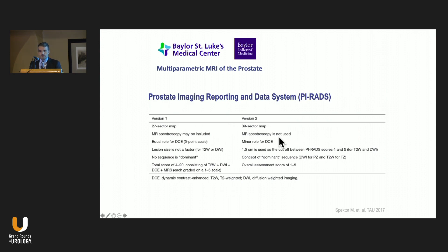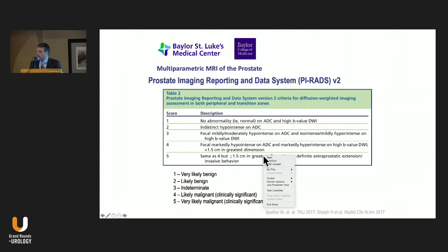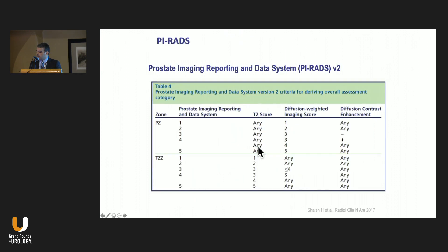A quick comparison between the original version of PI-RADS and the new version: there's a lot of improvement, less role for spectroscopy, and DCE seems to play a more minor role. We also talk about the dominant series for each area of the prostate. For lesions in the peripheral zone, we use DWI sequencing as the main dominant sequence to score these lesions. For lesions in the transition zone, we use T2-weighted sequencing to score them, using DWI just for quick differentiation.